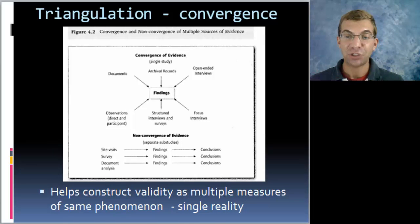So ultimately the goal to help construct validity is triangulation. You want all these forms of evidence to converge on the same finding. And that helps us reconstrue that a single reality definitely did happen and it happened the way that you're presenting it. So in that way we get confidence that your case study rendered the event as opposed to just an individual's interpretation of what happened.